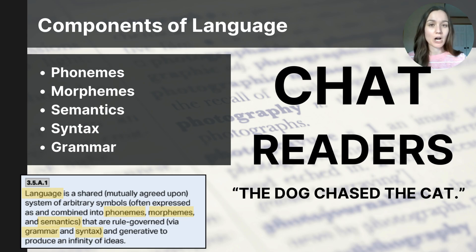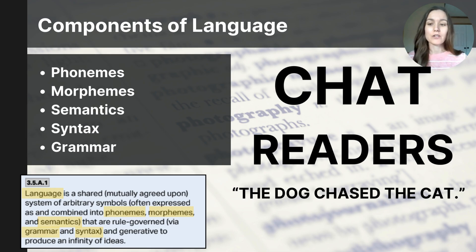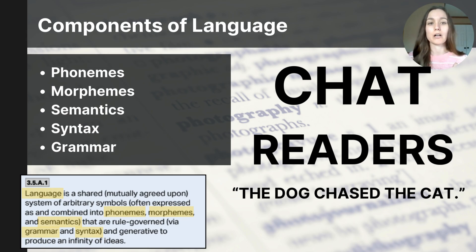Phonemes are the smallest unit of sound in language. I have the word 'chat' on the screen. Chat has three phonemes — it does have four letters, but it can only be broken down into three sounds: 'ch,' 'a,' and 't.' To remember what a phoneme is, remember the word 'phone,' which means sound. Sometimes students find this difficult because some English letters work together and can't be broken apart, so 'chat' does not have the same number of phonemes as letters.